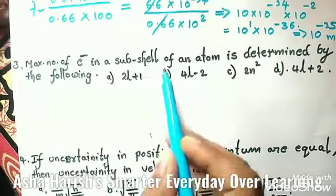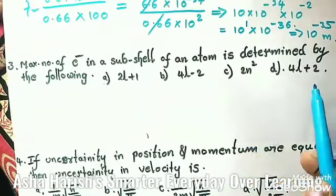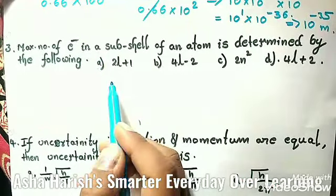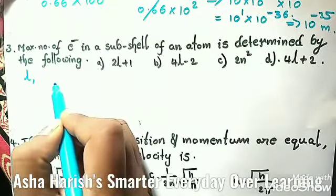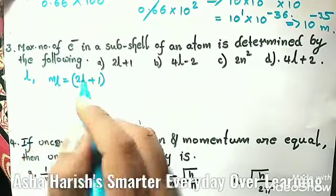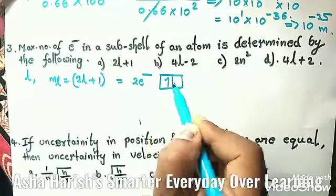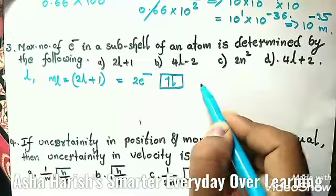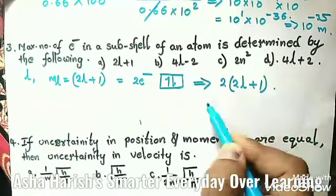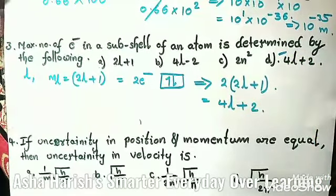Question 3: The maximum number of electrons in a subshell of an atom is determined by which formula? For a given subshell l, the number of orbitals (mₗ) equals 2l+1. Since each orbital can accommodate two electrons of opposite spin, the maximum number of electrons in a subshell is 2×(2l+1) = 4l+2. Option D, 4l+2, is correct.